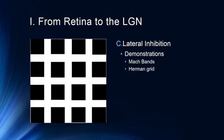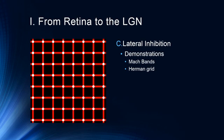Other illusions are based on lateral inhibition as well. We're going to talk about the Hermann grid and how center-surround antagonism contributes to the illusion. When you look at any of the junctions in the grid, you don't see a shadow, but at other junctions you do. We'll discuss how lateral inhibition and center-surround antagonism create these areas of reduced intensity, producing the illusion of a shadow.